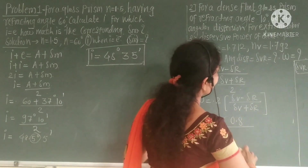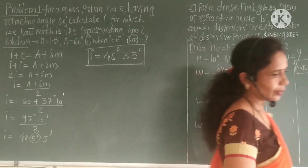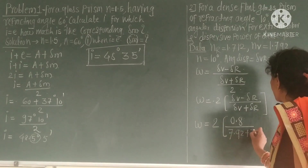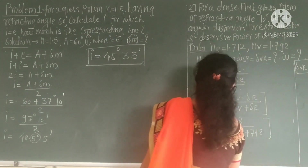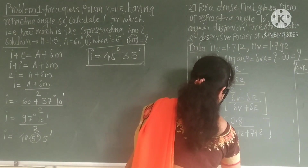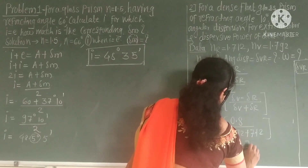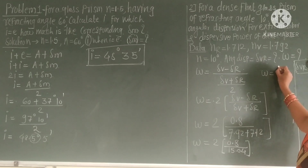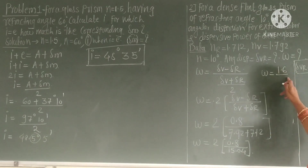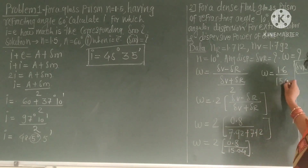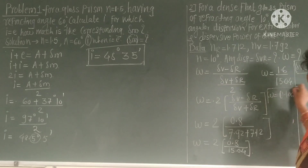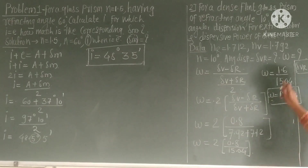δv is 7.92 and δr is 7.12, so δv + δr equals 15.04. Therefore omega equals 2 × 0.8 divided by 15.04 equals 1.6 divided by 15.04. Using the log table, omega equals 0.1064.